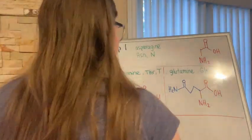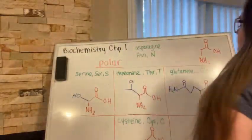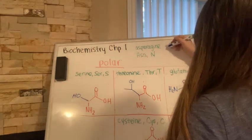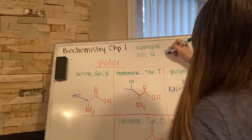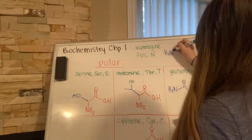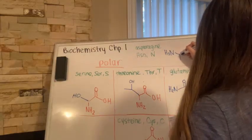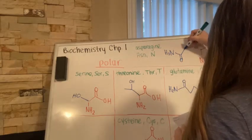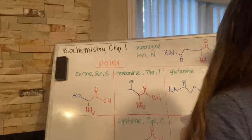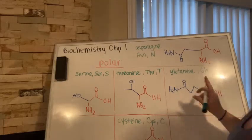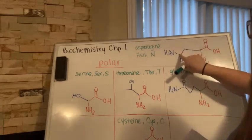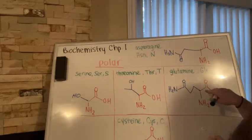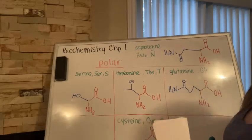Then we have asparagine, which is very similar to glutamine but with one fewer carbon. Asparagine's side chain has two carbons, while glutamine's has three carbons in that chain.